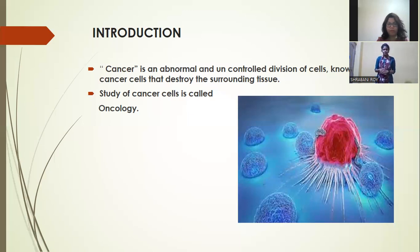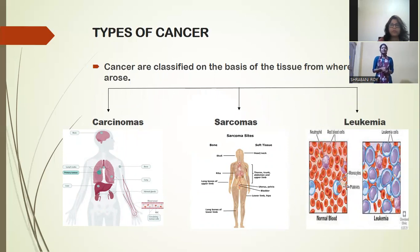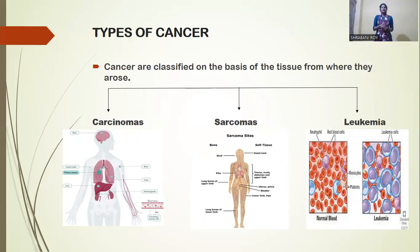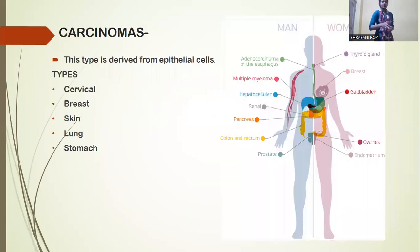Here I have given some pictures. Cancer is classified based on their tissues. There are three types of cancer: carcinoma, sarcoma, and leukemia. First, we will look at carcinoma cancer.